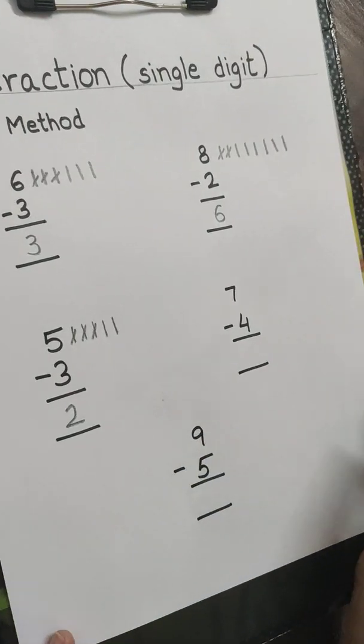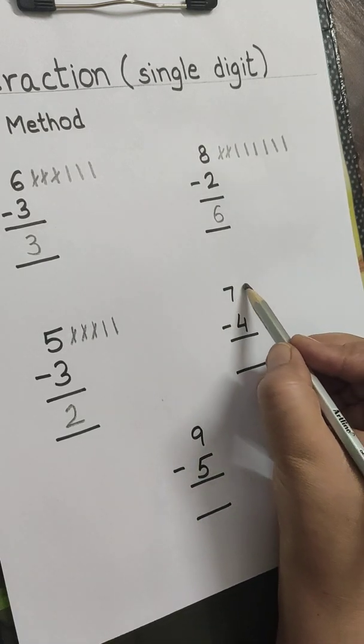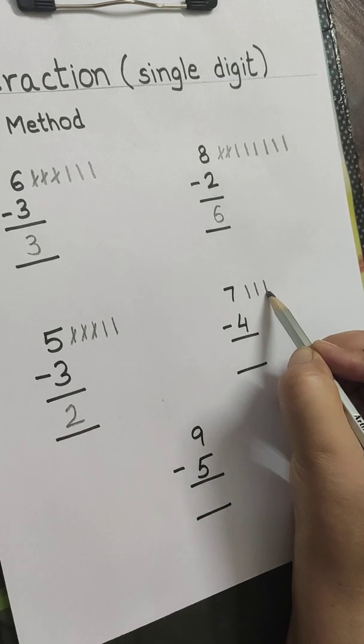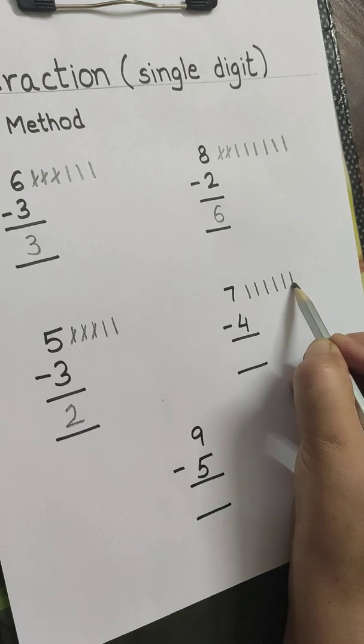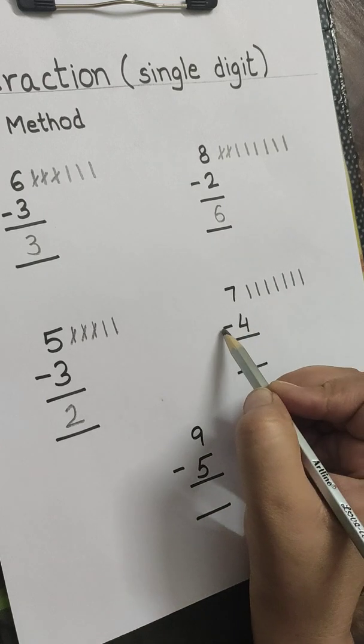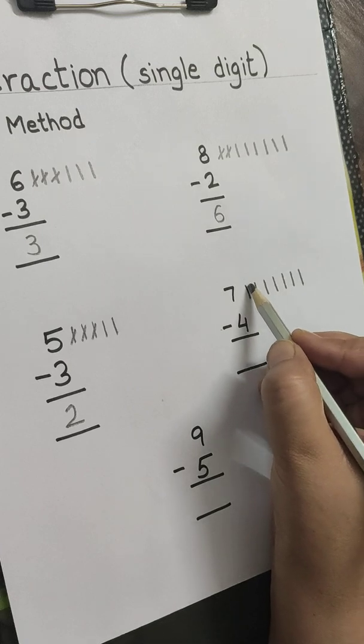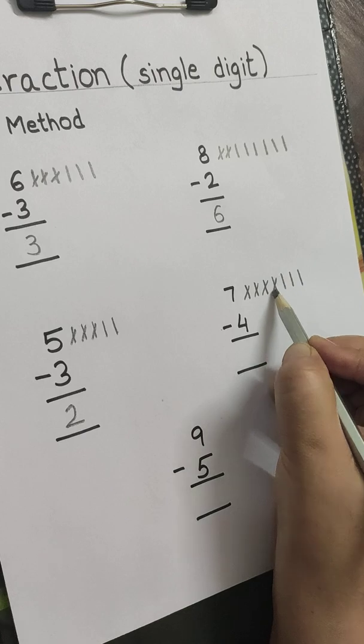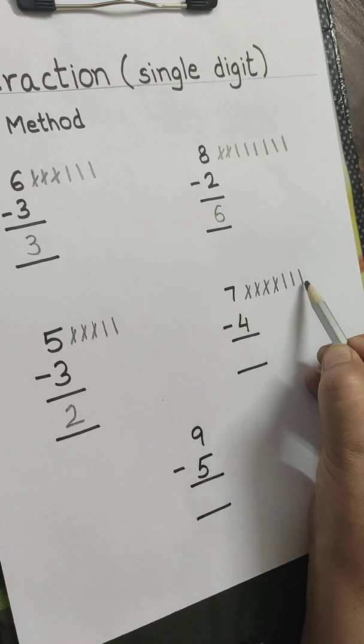Next is 7 minus 4. How many lines? 7: 1, 2, 3, 4, 5, 6, 7. Minus 4. How many minus 4? 1, 2, 3, 4. How many left? 1, 2, 3.